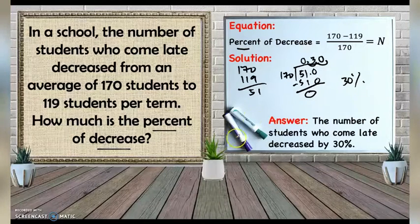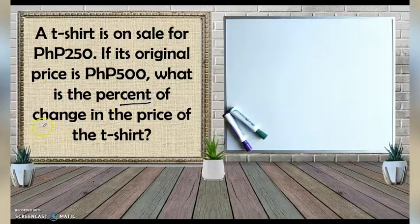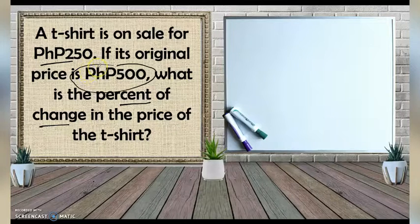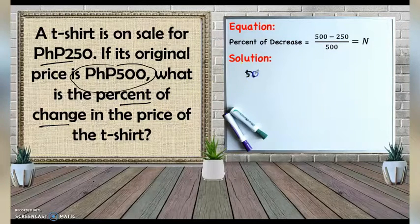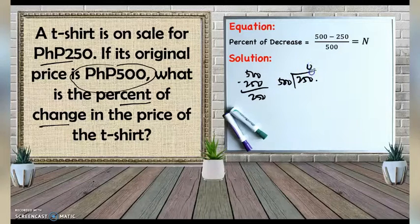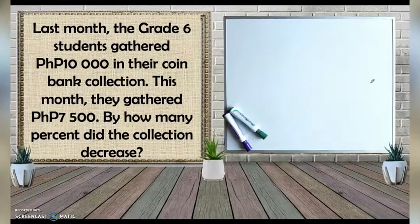Next: a t-shirt is on sale for 250 pesos; its original price is 500 pesos. What is the percent of change? Since the price went down, this is a percent of decrease. The equation is: 500 minus 250 divided by 500. That is 250 divided by 500. Adding a decimal: 2,500 divided by 500 is 5, no remainder. The answer is 0.5, which is 50%. The price of the t-shirt decreased by 50%.